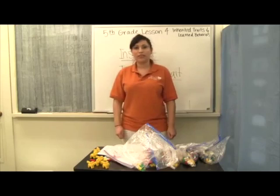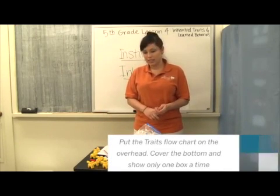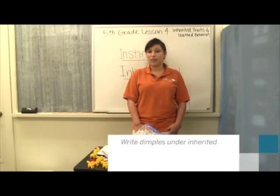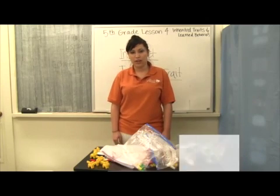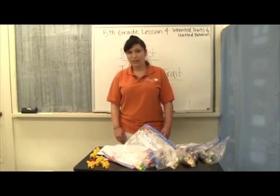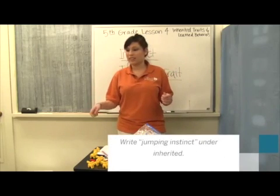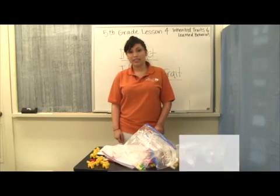Now we're going to go over this traits flow chart. You can see inherited traits can be behavioral or structural. We also have learned behaviors. So dimples — if that's an inherited trait you got from your parents — would that be an inherited behavioral trait or an inherited structural trait? It would be an inherited structural trait. Now what about the jumping whenever you got scared when I hit the table? That would be an inherited behavioral trait because it's an instinct.